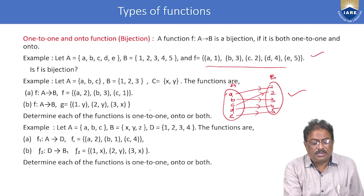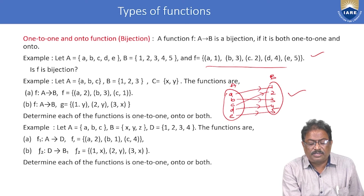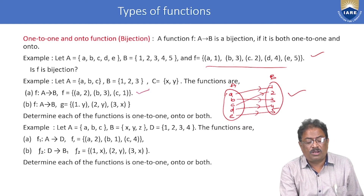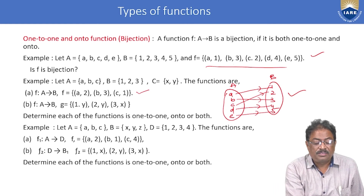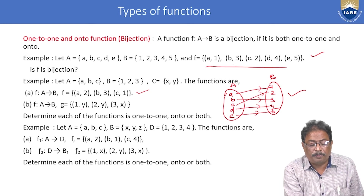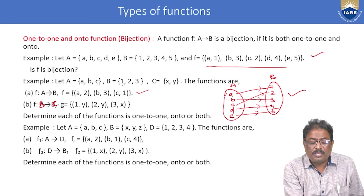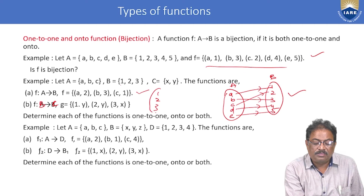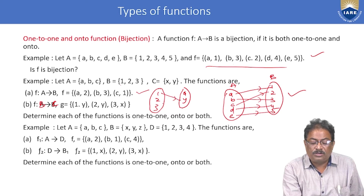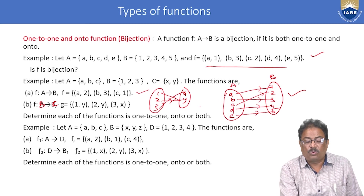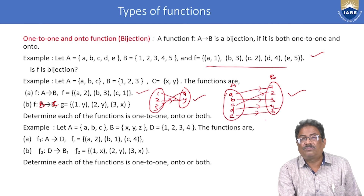Continuing with bijection examples: For function f, a→2, b→3, c→1 — this is also a one-to-one and onto function. For function g defined from B to C, with B = {1, 2, 3} and C = {x, y}: the mapping is 1→y, 2→y, 3→x. Since 1 and 2 both map to y, g is not one-to-one, but since every element of C has a preimage, g is onto.